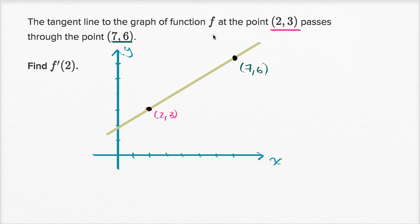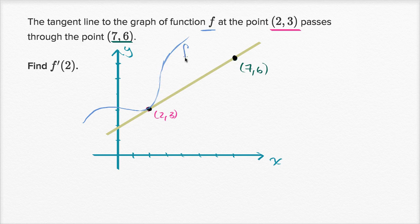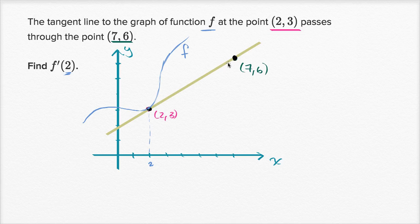We don't know anything else about f, but we can imagine what f looks like — our function could look something like this, just tangent to that line at that point. So when they say find f prime of two, they're really saying: what is the slope of the tangent line when x is equal to two? The slope of the tangent line is the slope of this line. They gave us the two points that sit on the tangent line, so we just have to figure out its slope, because that is the derivative of that function right over there — the slope of the tangent line.